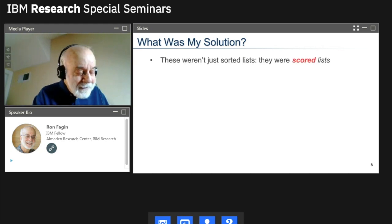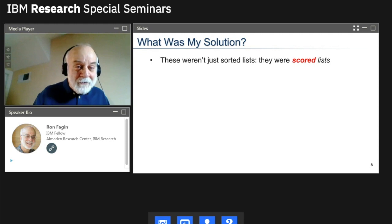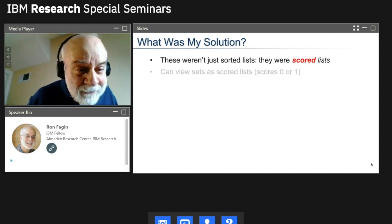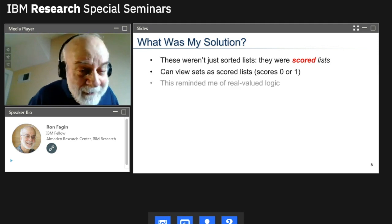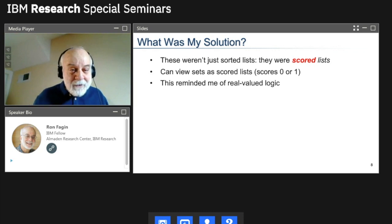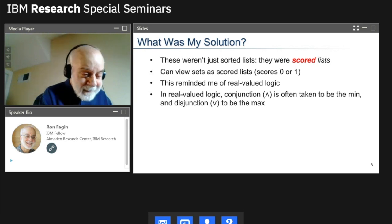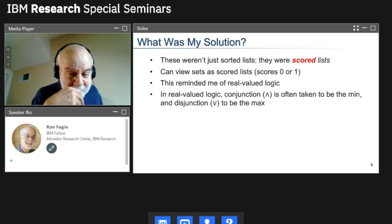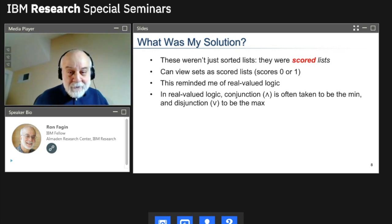So that's what I dealt with. So what was my solution? Well, first of all, it's often the case that when a practitioner asks a theoretician a problem, they leave out something important. And what Laura left out was that these weren't just sorted lists. They were scored lists. So you saw with the redness thing, there was a score there. And I thought, aha, scores. And so I thought, gee, now we're in there. We can match these things up. Sets are scored lists also. Zero if it's not in, one if it's in. So they're both scored lists. So I can combine these scored lists. Wonderful. And that reminded me of real valued logic. Some flavors of that are called fuzzy logic, where things have scores, not necessarily zero or one, but in between zero and one.